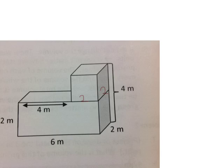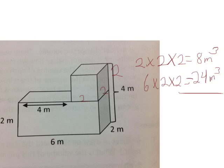So the height of the box must be 2 meters. The volume of the top box, then, 2 times 2 times 2 meters equals 8 cubic meters. The volume of the bottom box would be 6 times 2 times 2. So the volume of the bottom box is 24 cubic meters.